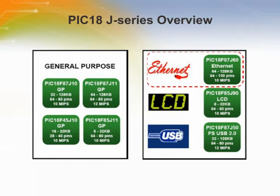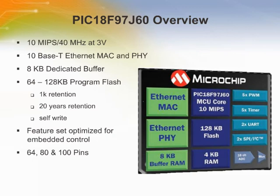The PIC18F97J60 family is compliant with industry standard 10BASE-T Ethernet. The family comes with an integrated on-chip MAC and PHY for Ethernet. The PIC18F97J60 is a superset device with 64, 80, or 100 pins. With 10 MIPS performance at 3 volts, this family offers a 10BASE-T Ethernet MAC and PHY on-chip with 8 kilobytes of buffer RAM dedicated for Ethernet communications, providing a full state machine so as to prevent overloading the core when sending or receiving packet data.